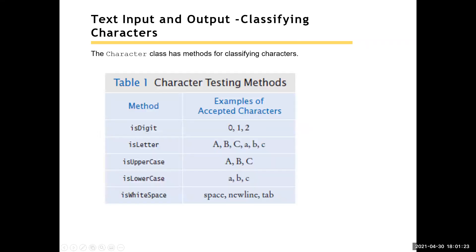When reading characters, we have similar checks to C++. If I read one character, I can check if it's a digit, a letter, uppercase, lowercase, or whitespace — where whitespace is tab, newline, and space. One way of validating input when you have a mixture of types is to read one character at a time and check if it's what you want or if it's the start of something you're looking for.